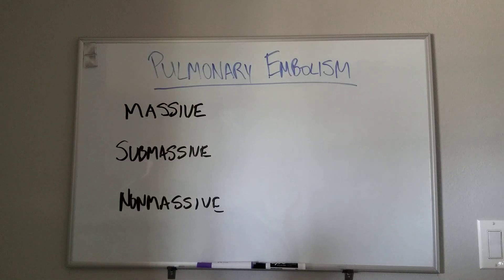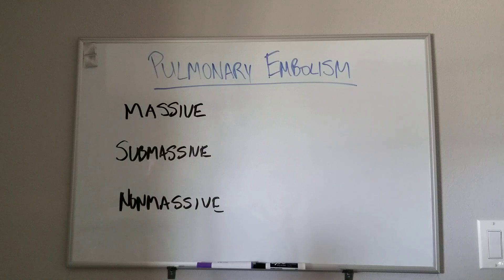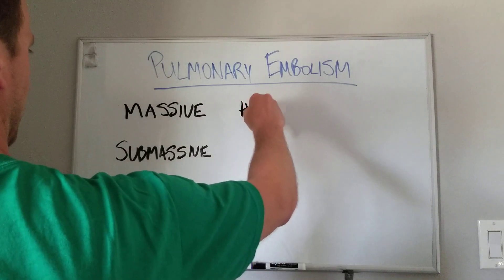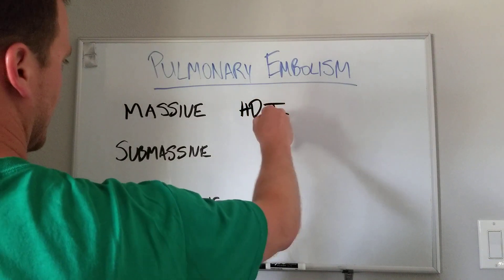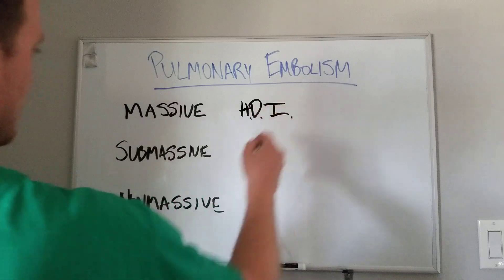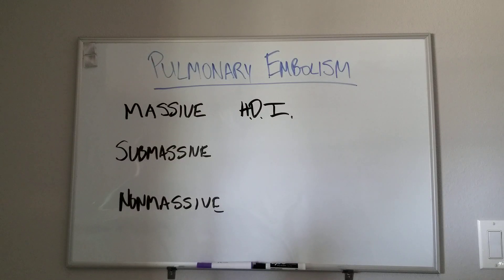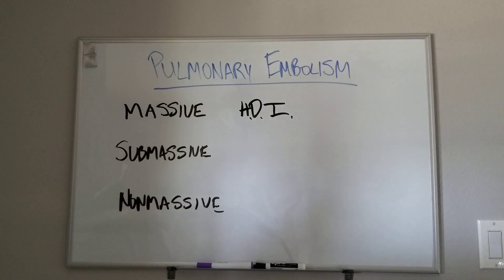A massive PE is easy to remember because that means the patient is hemodynamically unstable — tachycardic, hypotensive, very labile, inability to keep their saturations up, and they're really sick. This is like the huge saddle pulmonary embolus that you need to treat right now. We'll talk about the treatment of that in a second.